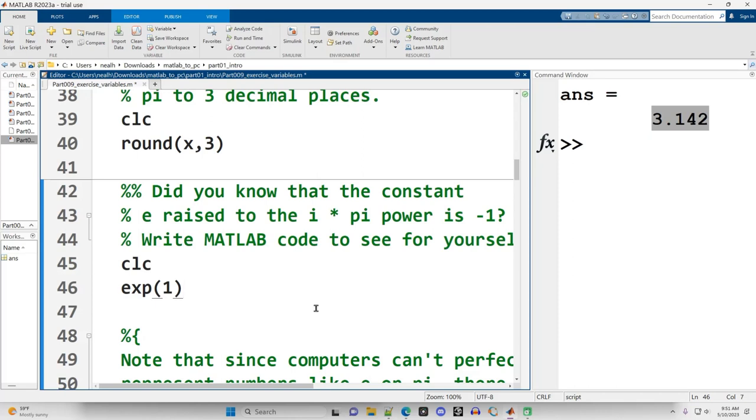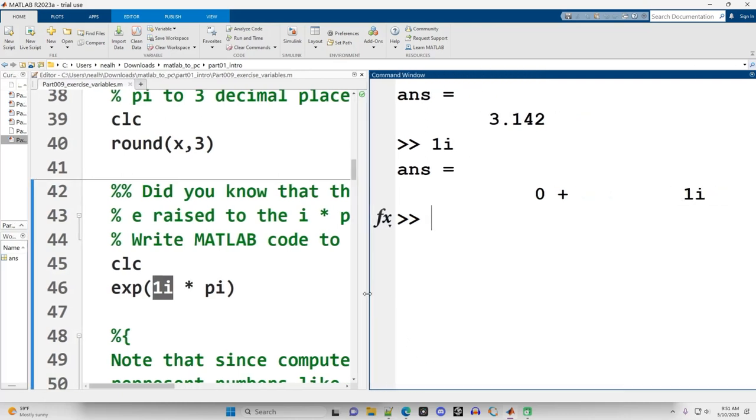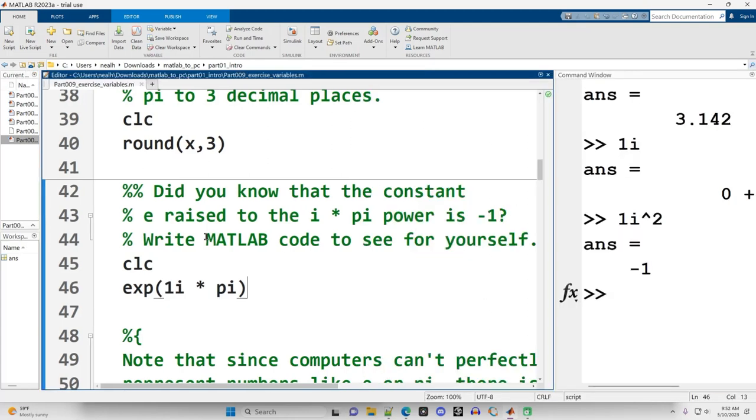Now we don't want to raise it to the first power. We want to raise it to the i times pi power, which I can actually just copy in right there. i is also built in in MATLAB. Now they would prefer if I write it as one i, and it's the imaginary number. Like literally, if I do one i over here in the command window and hit enter, it scrolls off the screen, unfortunately. But zero plus one i. But if, for example, we take one i and square it, we should get negative one. And we do right there.